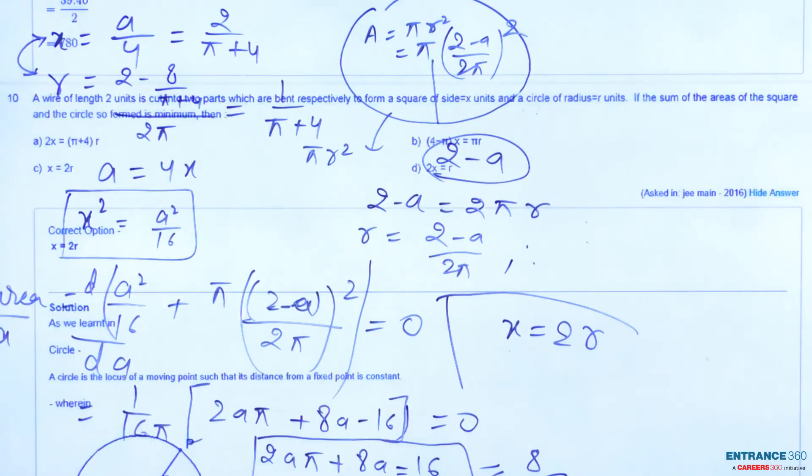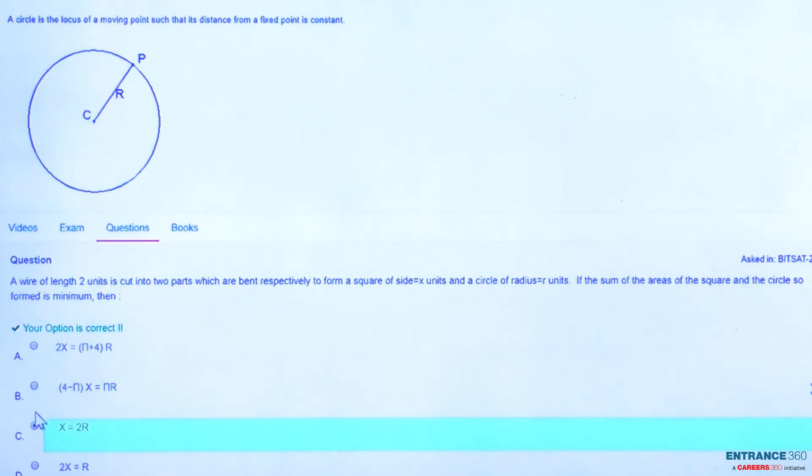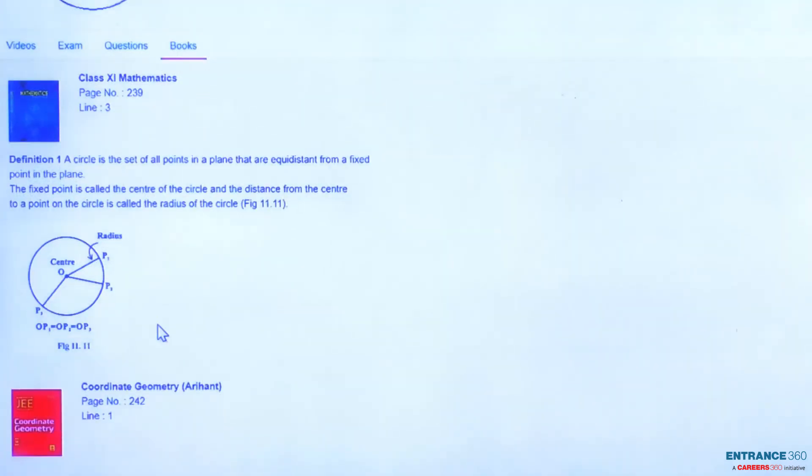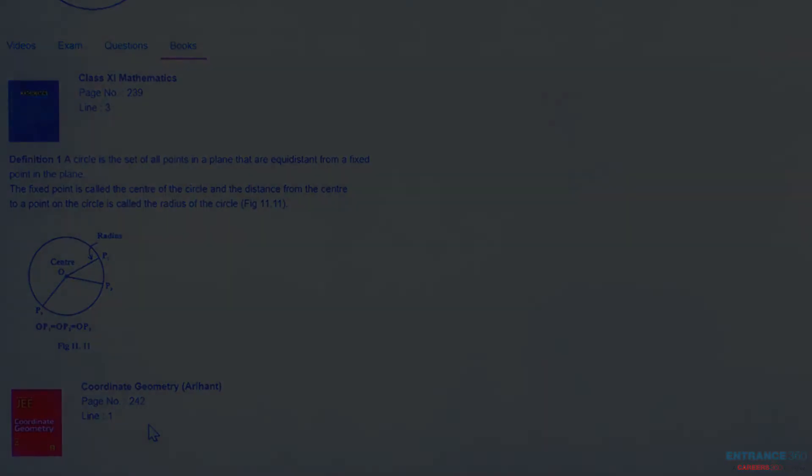We see the option, option C is the correct option. If you have any doubt regarding this question or concept, you can also watch the video, takes around 2 or 3 minutes. You can also read the book, this is an NCERT book class 12th mathematics. You don't need to read whole book, you have to focus only that page number 239 line number 3, and there is another given book Arihant publication coordinate geometry page number 242 line number 1. Thank you students.